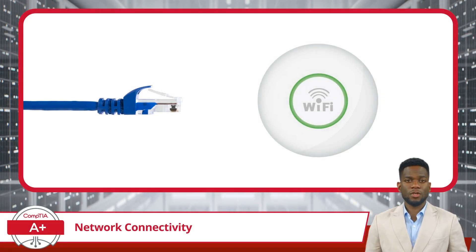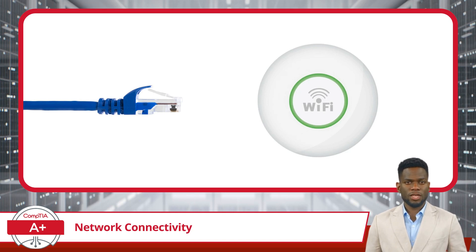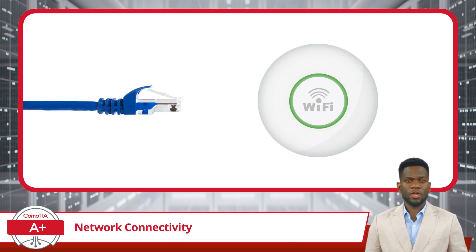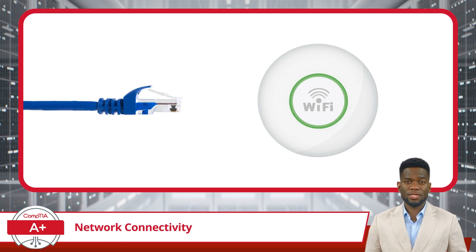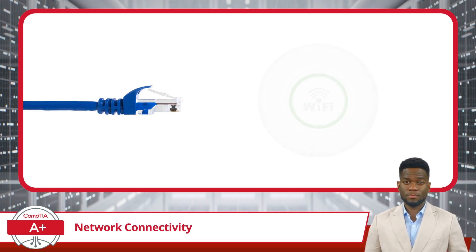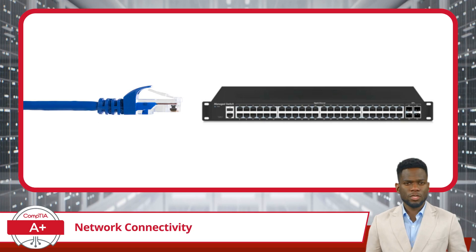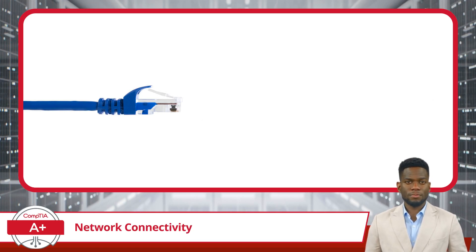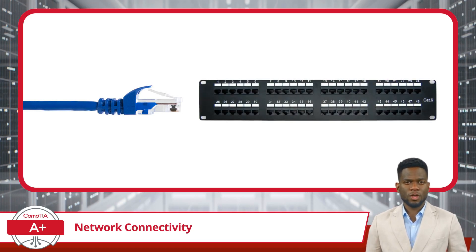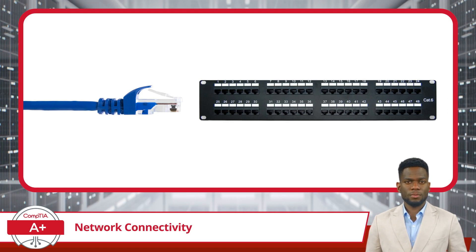Additionally, Ethernet cables with RJ45 connectors can be used to connect devices such as wireless access points for wireless network expansion, commercial-grade switches for network segmentation and management, and the front of patch panels for organized cable termination.